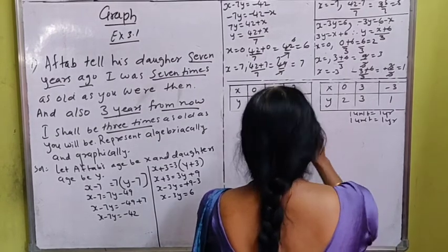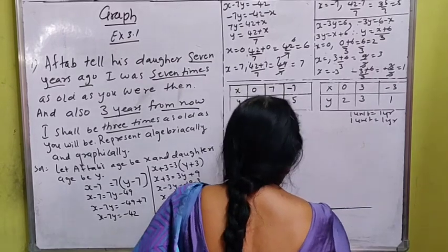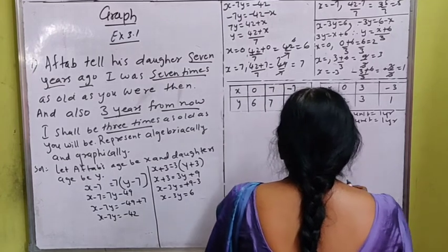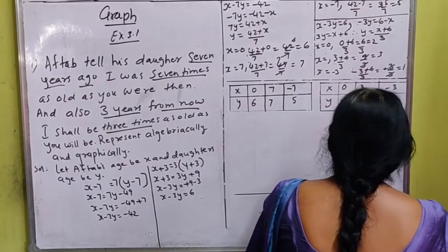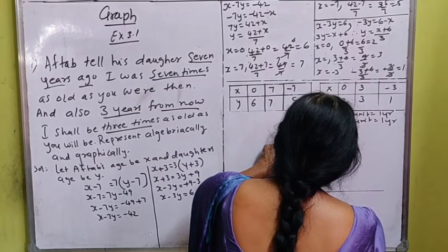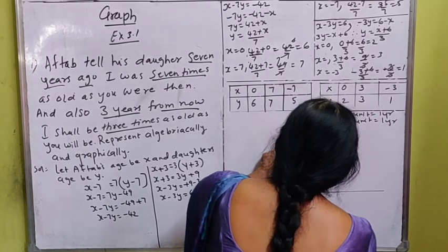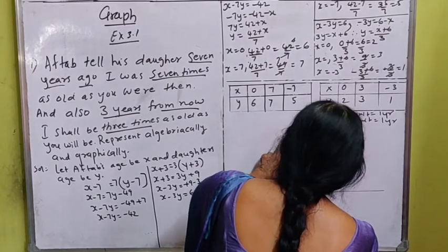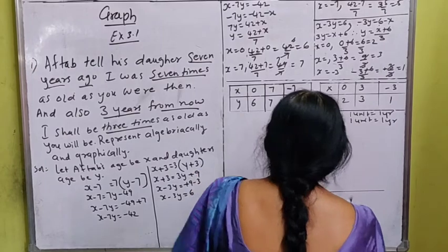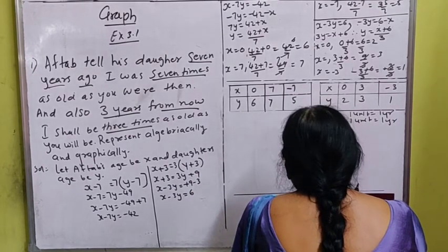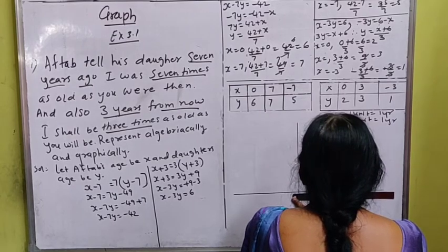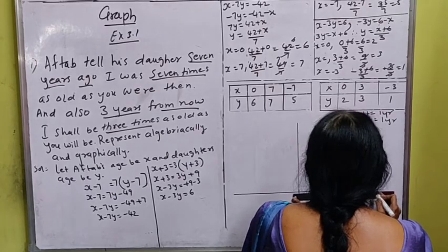On the x-axis, since we have X = −7, we need to extend to both sides. Mark from 0 to 7 on the right and 0 to −7 on the left. On the y-axis, the maximum Y value is 7, so mark from 0 up to 6 or 7. Also show at least two negative markings on the y-axis.